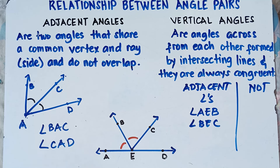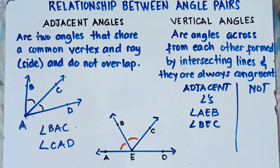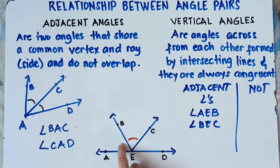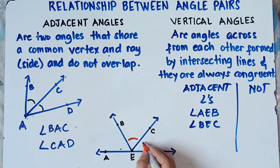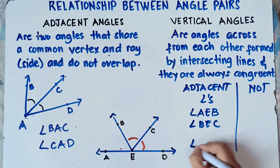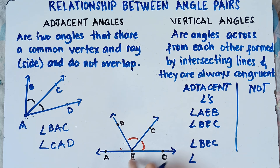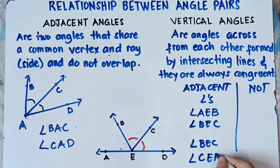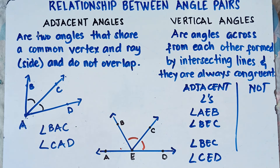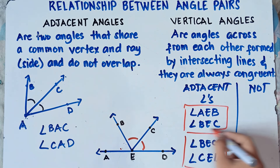What else? Can we say that angle BEC is adjacent to angle CED? Yes, that's correct, because they share a common side, that is ray EC, and they share a common vertex, that is vertex E. So angle BEC is adjacent to angle CED. Those are adjacent angles.